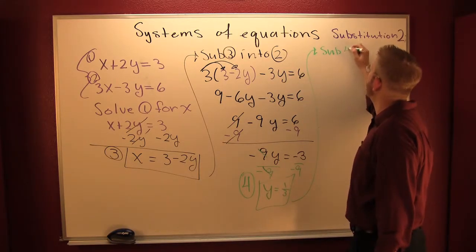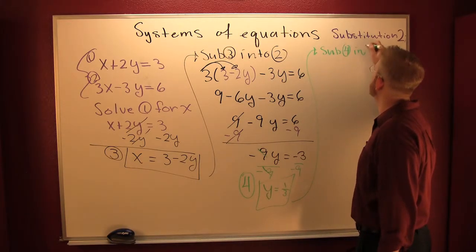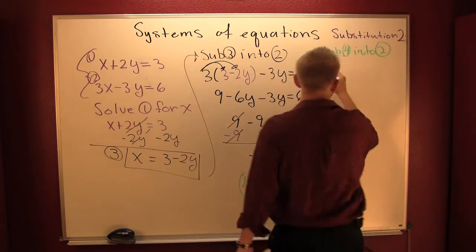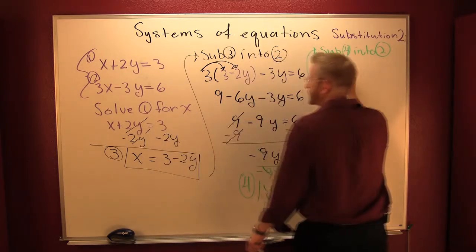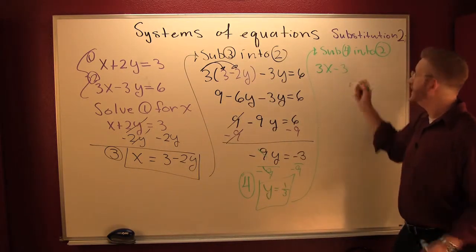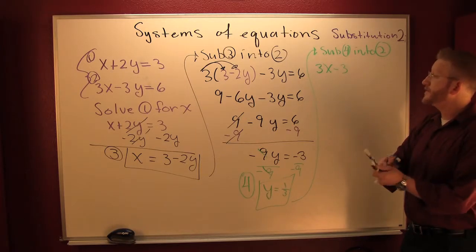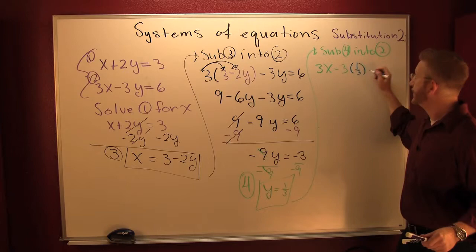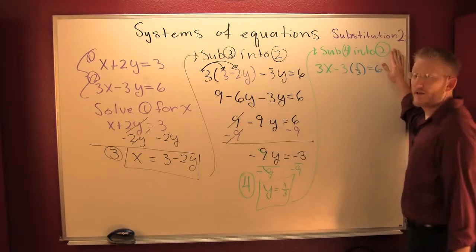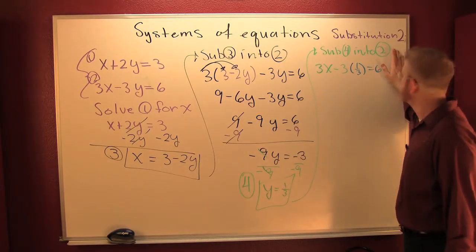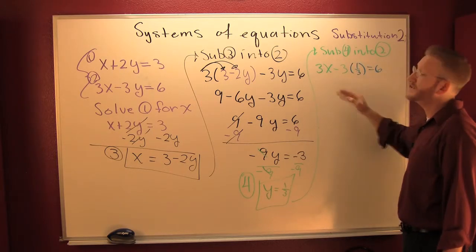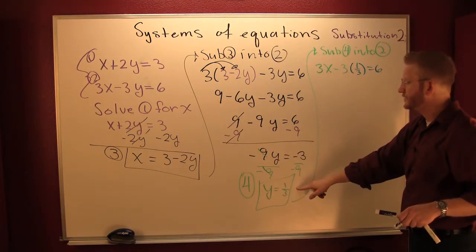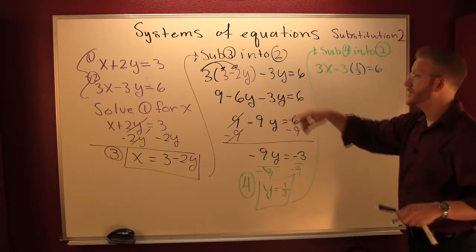Sub four into two. Take it, stick it. Three X minus three, what was my Y? I found it to be one third. That's equal to six. So we wanted to plug four into two. And the reason we did it is because it was nice numbered. So my four was one third. Or Y was one third. And I stuck it into two.